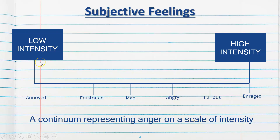We've got low intensity words for anger — starting with annoyed and frustrated; our mid-range, which is mad and angry; and then our high intensity anger, which is furious and enraged. We can all agree that feeling enraged is very different to just feeling mildly annoyed. It's the same emotion, but very different intensities. This will have a huge effect not only on our subjective feeling regarding the situation, but also our physiological responses and our expressive behaviours.